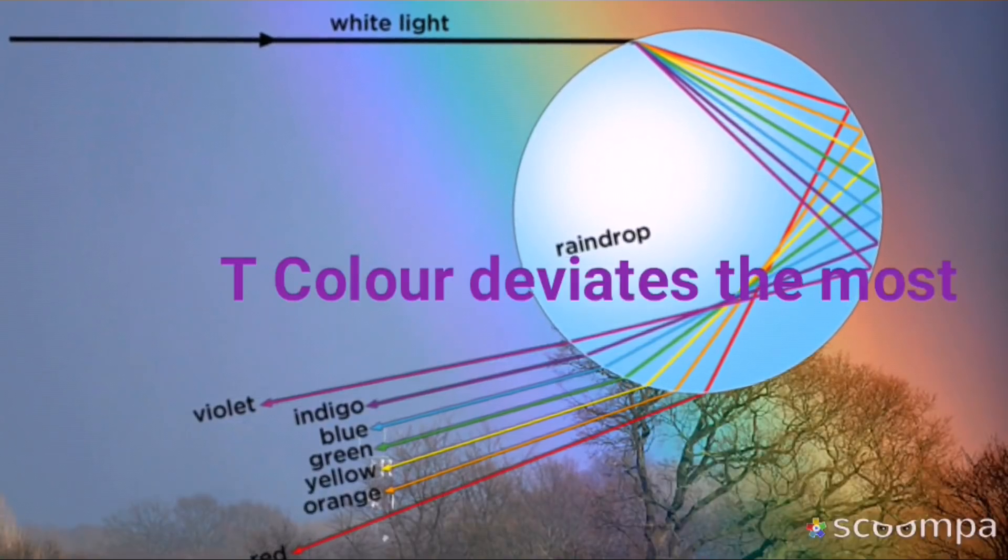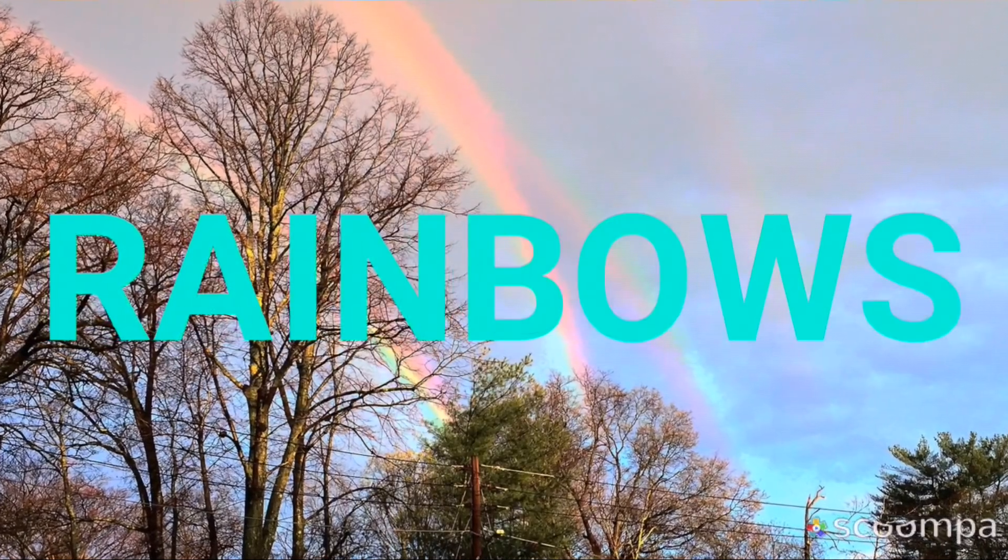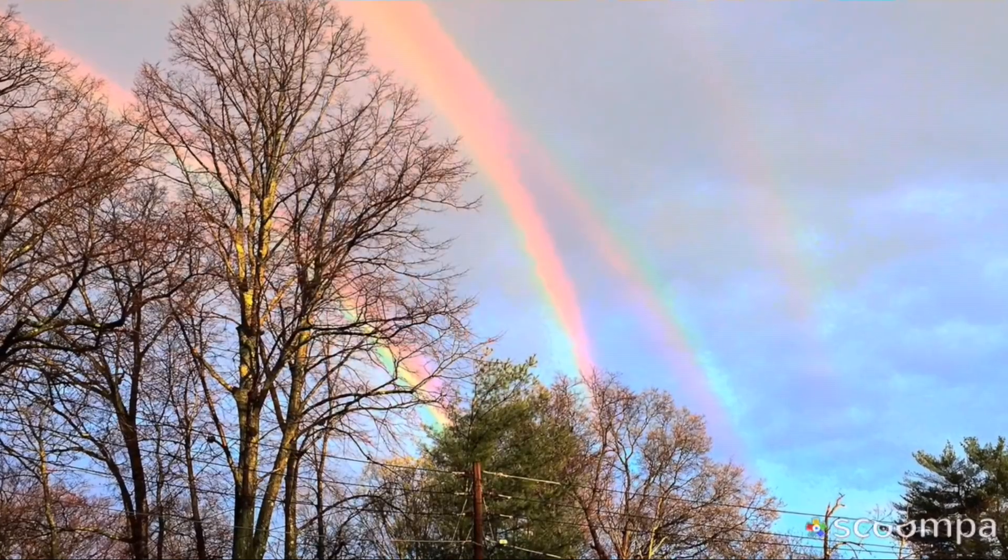A rainbow is a meteorological phenomenon that results in a spectrum of white light appearing in the sky as a result of reflection, refraction, and dispersion of light in water droplets.